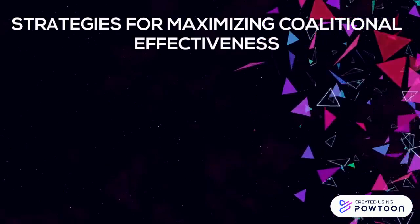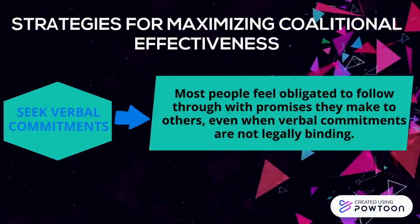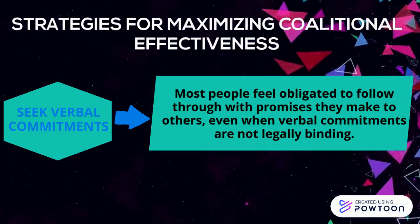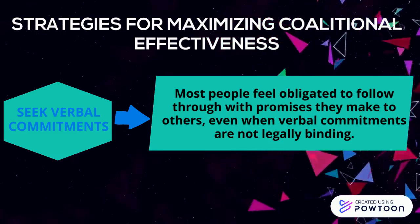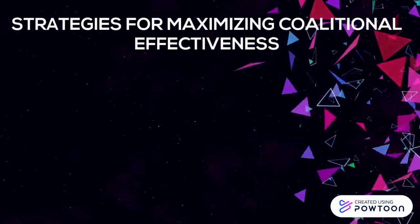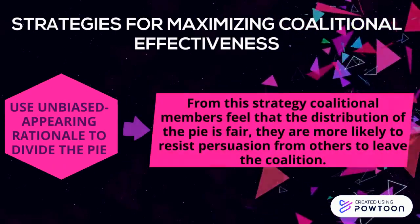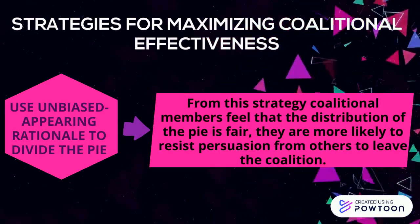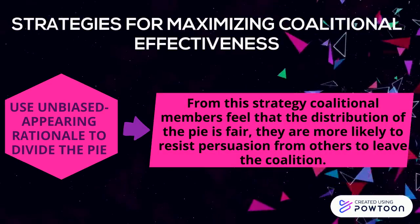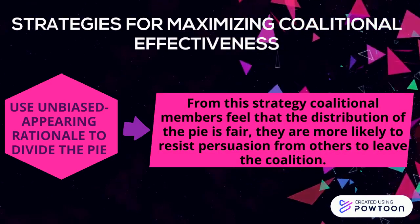Regarding verbal commitments: most people feel obligated to follow through with promises they have made to others, even when verbal commitments are not legally binding. Regarding using unbiased rational methods to divide the pie: when rational members feel that the distribution of the pie is fair, they are more likely to resist leaving the coalition.